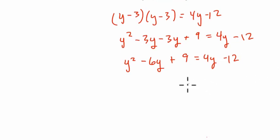So now what am I going to do? Well, now I'm going to subtract 4y from both sides and add 12 to both sides. We'll bring everything over to one side. And this gives me 0 on the right-hand side. That's okay.